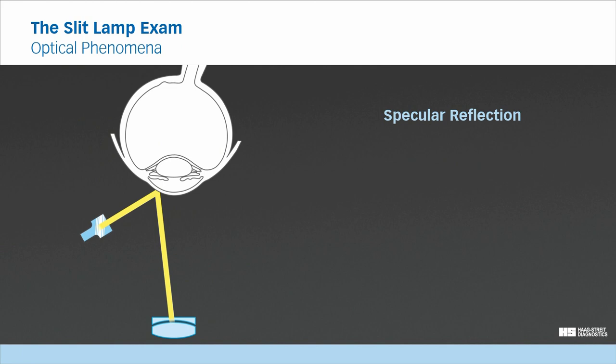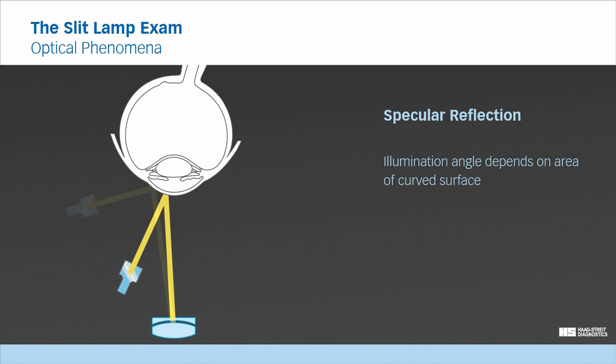When choosing the observation angle, you have to keep in mind that according to the law of reflection, the angle of the incident light equals the reflected light. Peripheral areas of the cornea require an increased illumination angle.